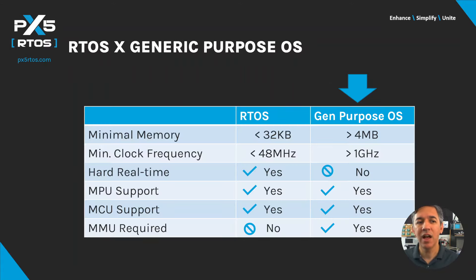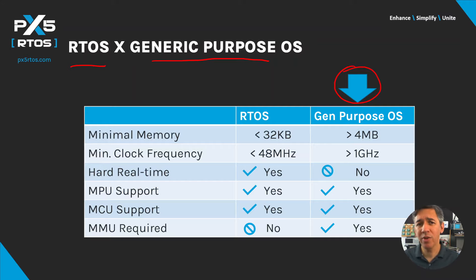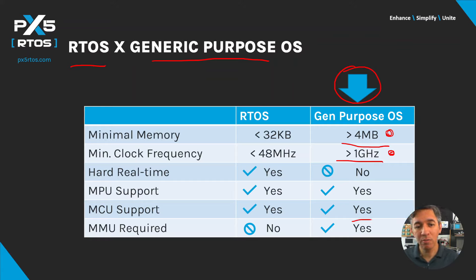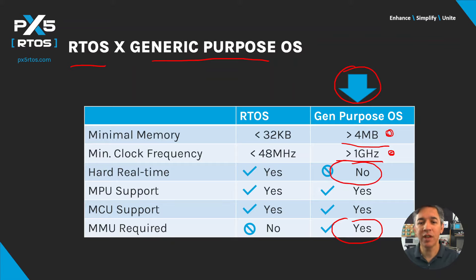Let's now see how RTOS and GPOS compare in this table. A GPOS is primarily designed to offer a rich set of services that require a significant amount of memory — typically more than 4 megabytes — and processing power, typically more than 1 gigahertz. GPOS also requires an MMU, or memory management unit, to support virtual addressing. Finally, GPOS are typically not designed to support hard real-time requirements.